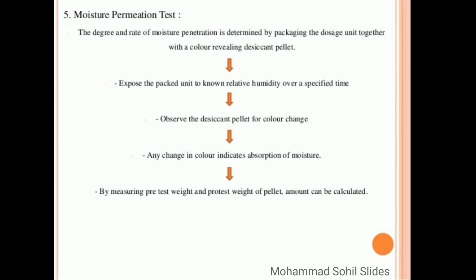Then expose the packed unit to known relative humidity over a specific time and observe the desiccant pellet for color change. If any change in color indicates absorption of moisture, by measuring pre-test weight and post-test weight of pellet, then amount can be calculated.